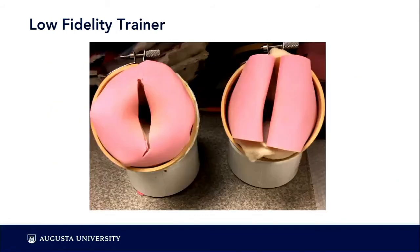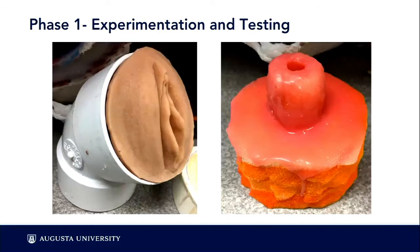This is the low fidelity trainer they were using previously: a PVC elbow pipe for the base, some craft foam for the vulva, an embroidery hoop to hold it all together, and cotton batting and clay on the inside. Again, we wanted to improve fidelity and expand the range of dilation and effacement sizes offered for testing.